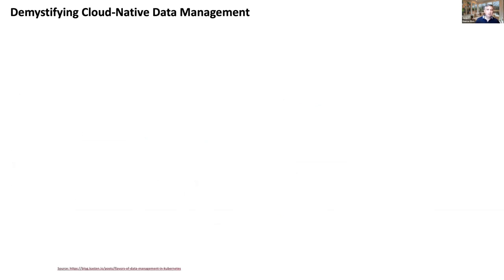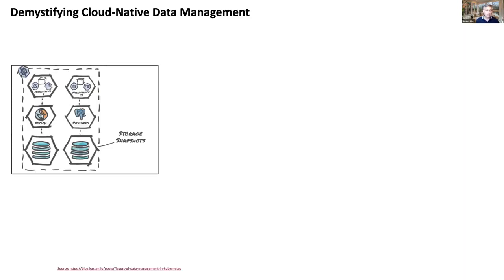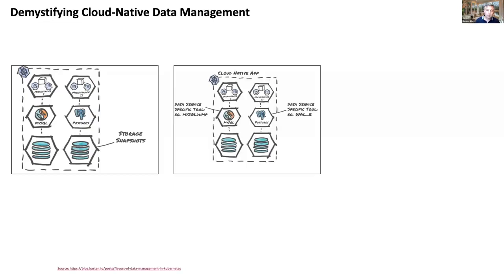Let's think about how to simplify data management applications like backup. If I take that simple cloud native application with two microservices, there are a few layers: the storage layer, the data services layer, and above that your application pods and config objects. One way to capture state is through storage snapshots — typically provided by storage vendors. Kubernetes is standardizing the APIs with something called the CSI, which gives you crash consistency.